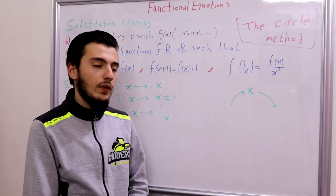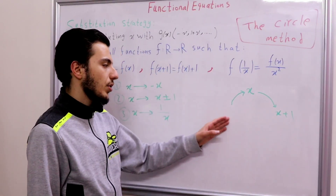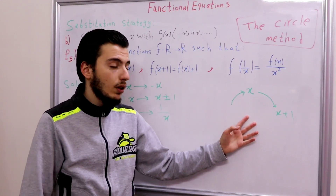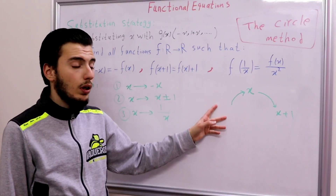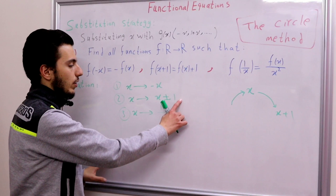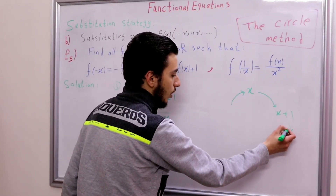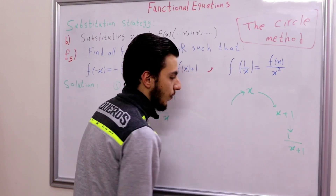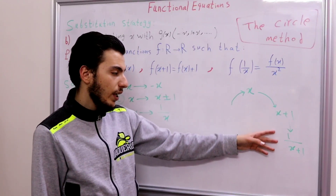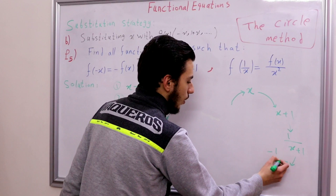Let's start drawing our circle. The first process is adding 1, so we write x + 1. Since we just used the second process, we won't use it again immediately — we'll choose either the first or the third. Let's choose the third: take the reciprocal of x+1 to get 1/(x+1). Then we apply the first process and take the negative to get -1/(x+1).